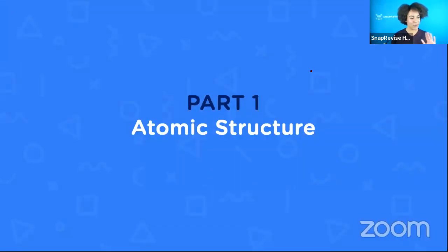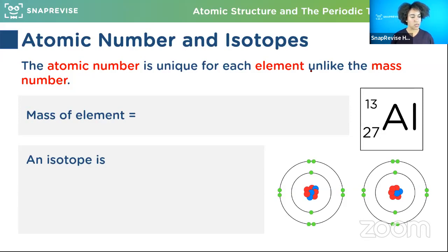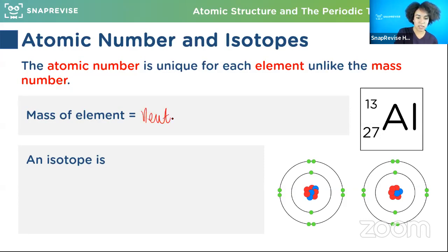We've covered everything we need to know from GCSE and we're going to look at Part 1. The first thing we need to cover is what the mass means and what that tells us about isotopes. The atomic number is unique for each element, unlike the mass number. Can somebody tell me how you work out the mass of an element? Neutrons plus protons - because as we learned at GCSE they both have a mass of one.